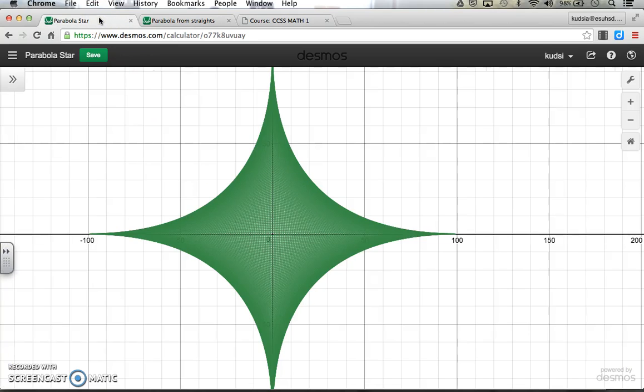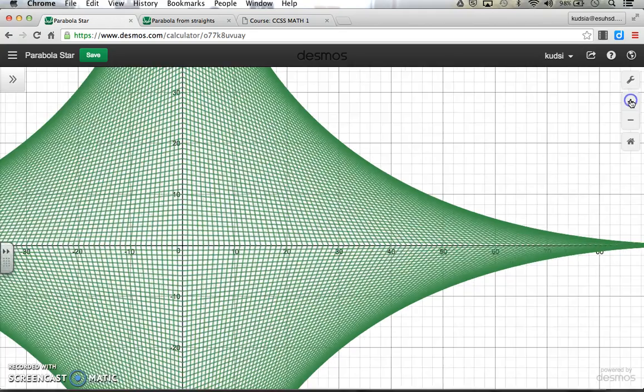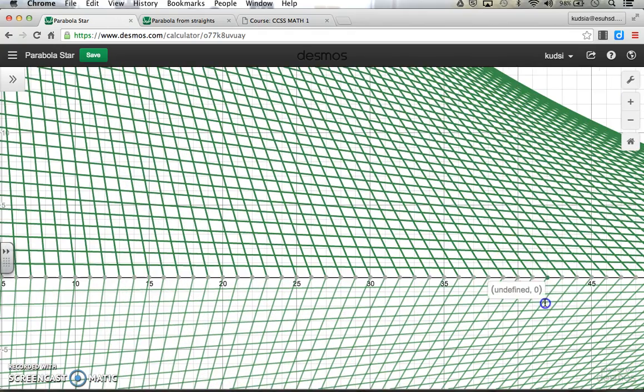This one was actually created using just four equations, one equation for each quadrant. And then I told the computer, do this 100 times. So believe it or not, if you zoom in, there are actually 100 lines in here, and it gets really, really cool.